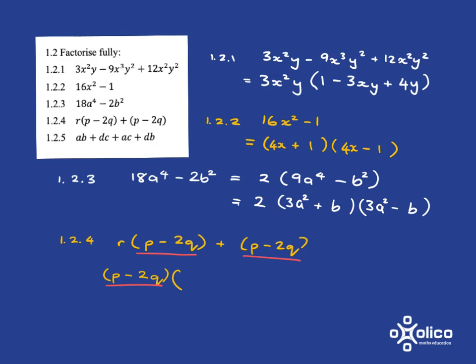What is left from here? Well, we've pulled out the p minus 2q, so what's left is the r. And what is left from here? Well, we've pulled out the p minus 2q, so we've just got to put in a 1, because 1 times p minus 2q will get us back to p minus 2q. And so, we have factorized as asked.